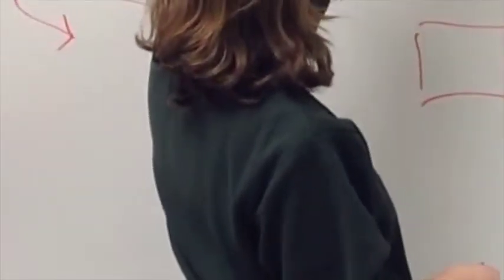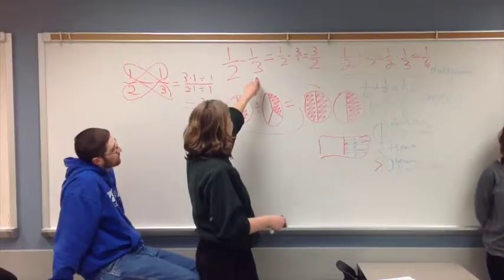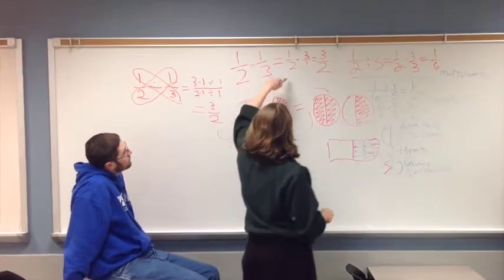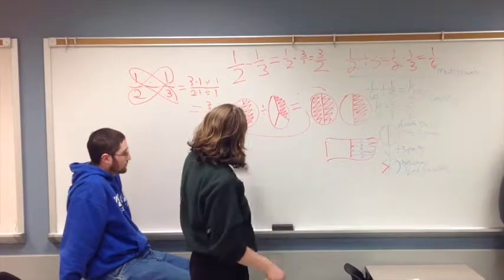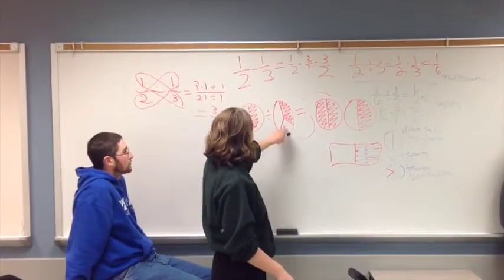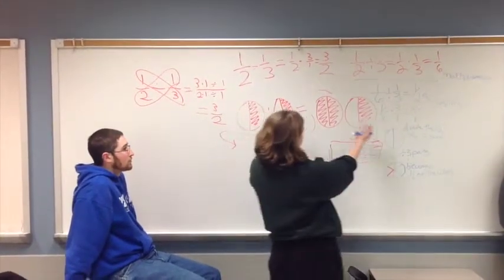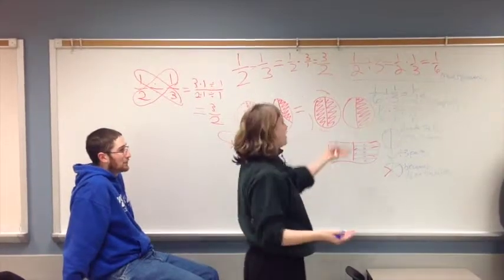The rule is you flip the one-third and then you multiply across. And my picture was originally, you had a half divided by a third and you magically get three halves.